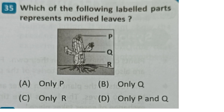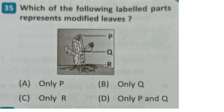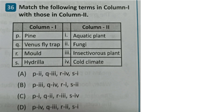Next question: Which of the following labeled parts represents modified leaves? Options: only P, only Q, only R, only P and Q. The correct answer is B - only Q. Next question: Match the following terms in column 1 with those in column 2. The correct answer is D.